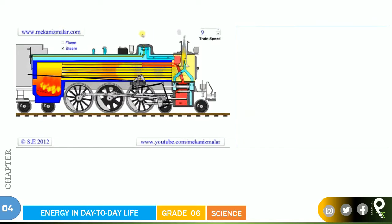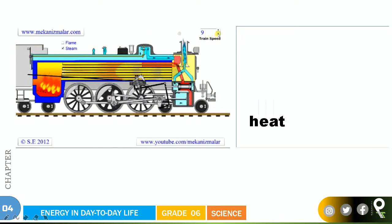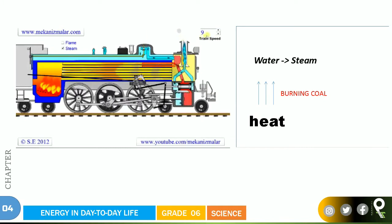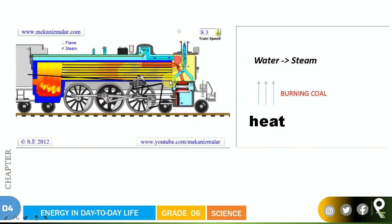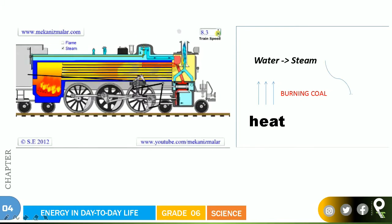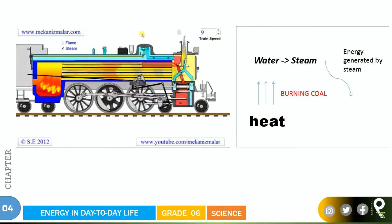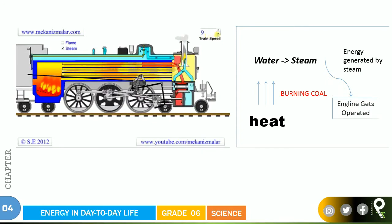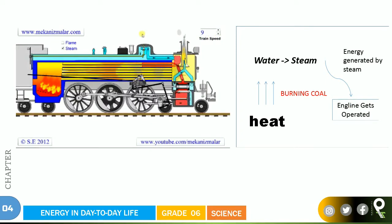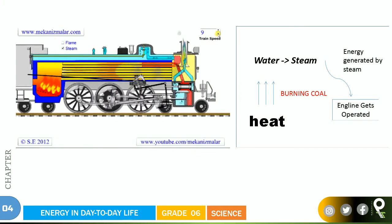We must understand that one in a very careful way. The coal is burning, right? When the coal is burning with the heat, what exactly happens? We make this water — the dark blue color water — and that will become steam. Energy is generated by that steam, and then after that the engine gets operated. In a steam engine, coal is the thing they are using to generate the energy.